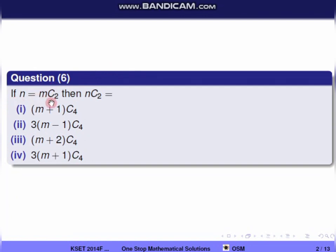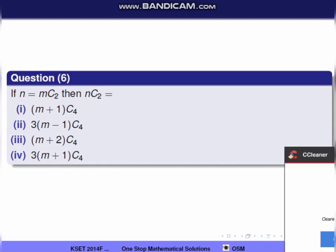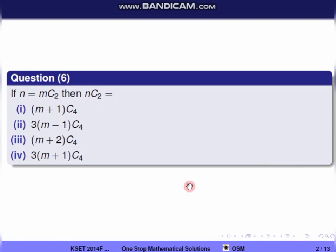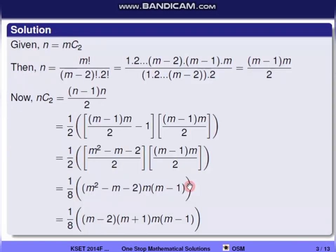If n is equal to mC2, then nC2 equals what? So we have the value of n because we have the value of nC2. n is equal to mC2, so the combination formula is used. n is equal to m factorial by (m minus 2) factorial into 2 factorial.